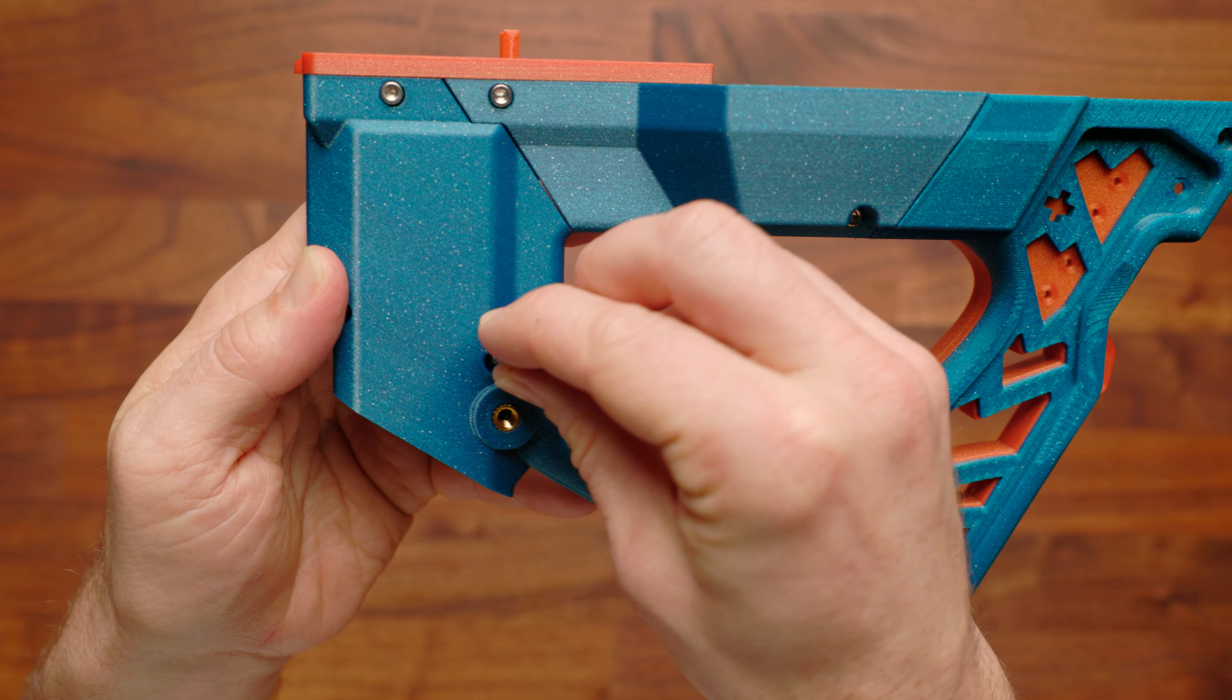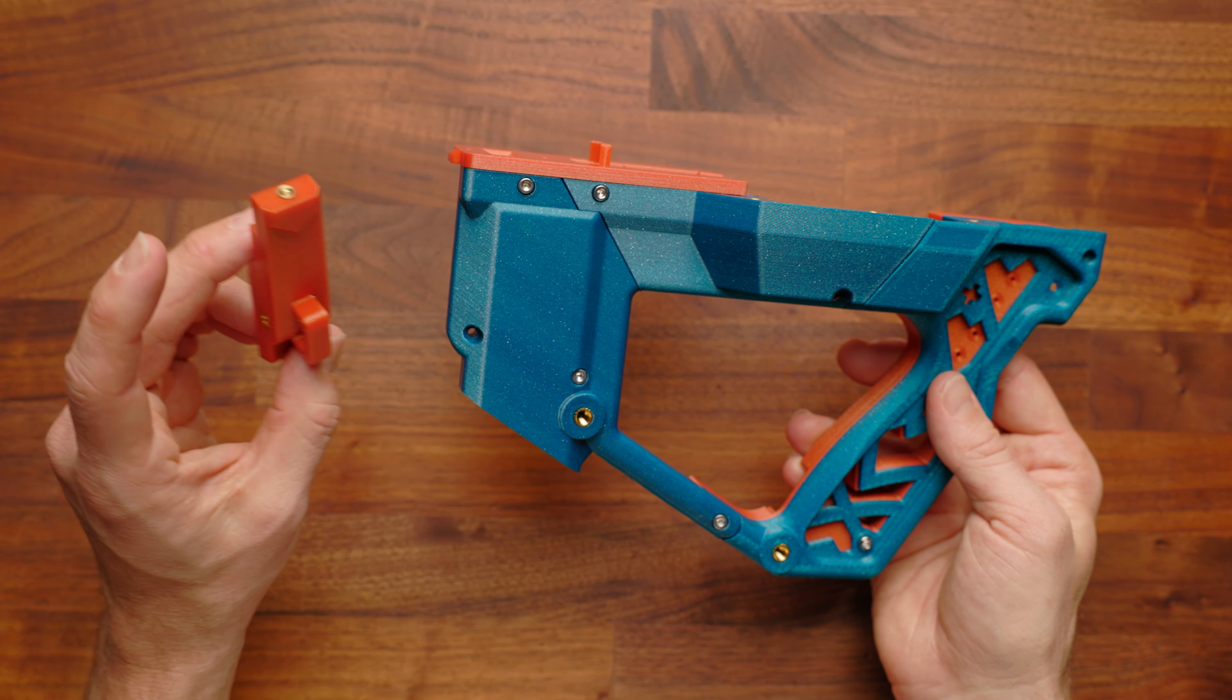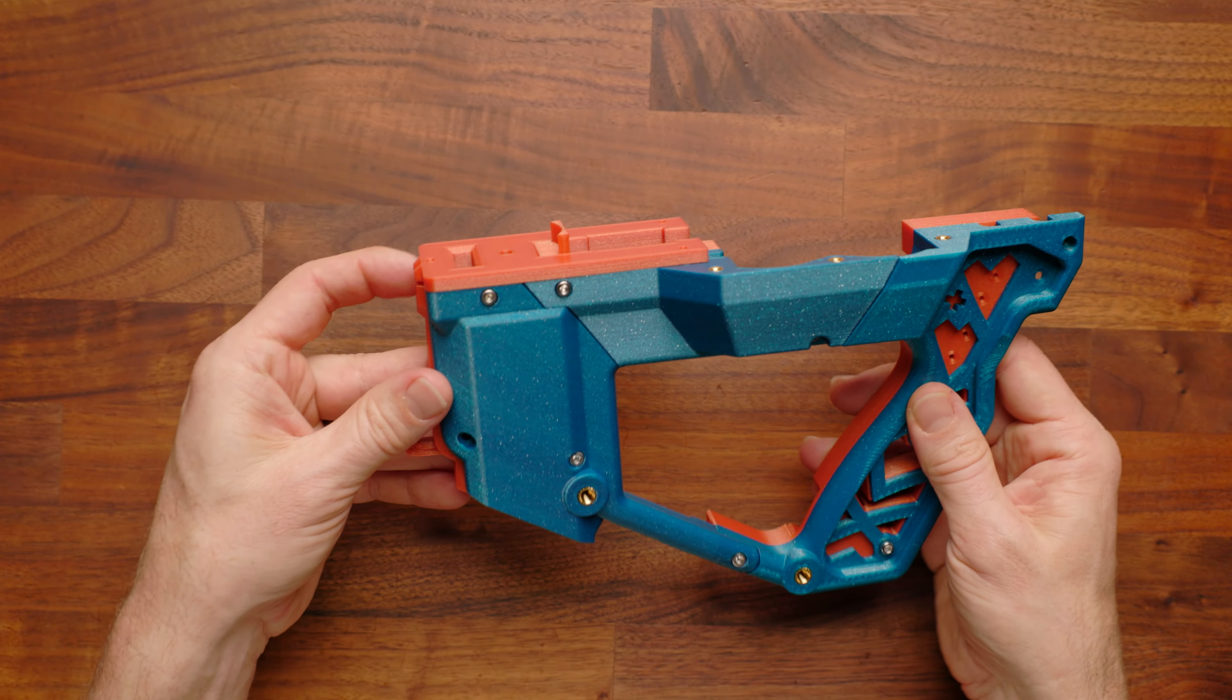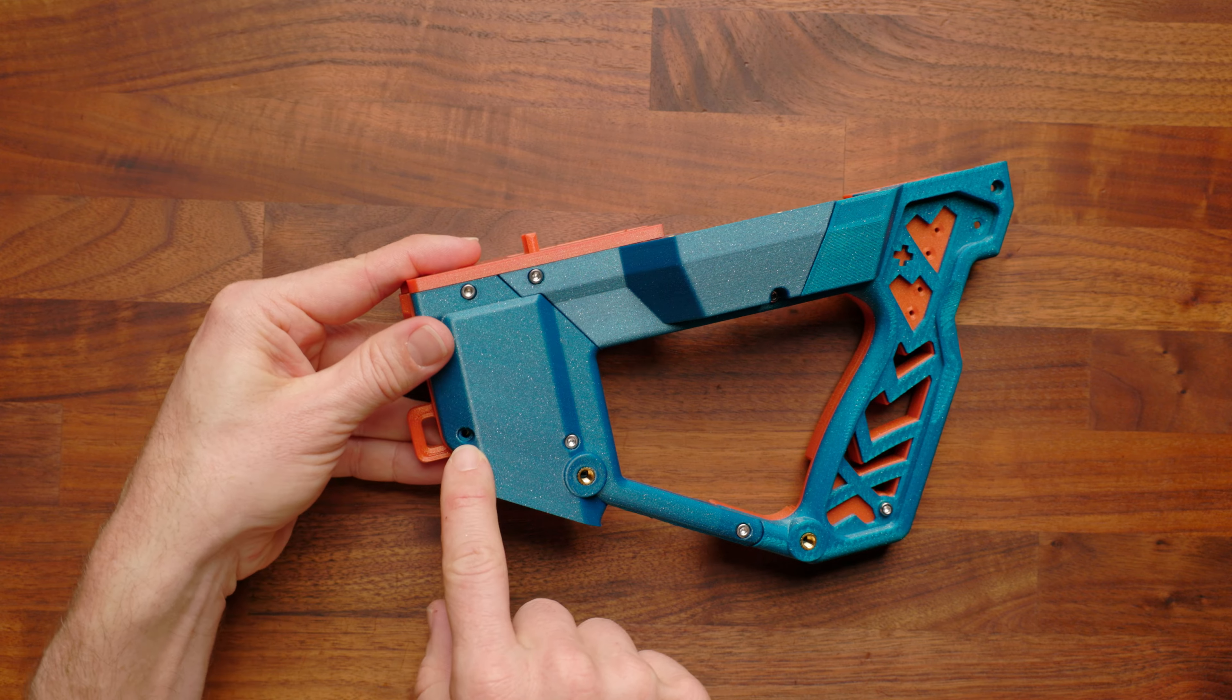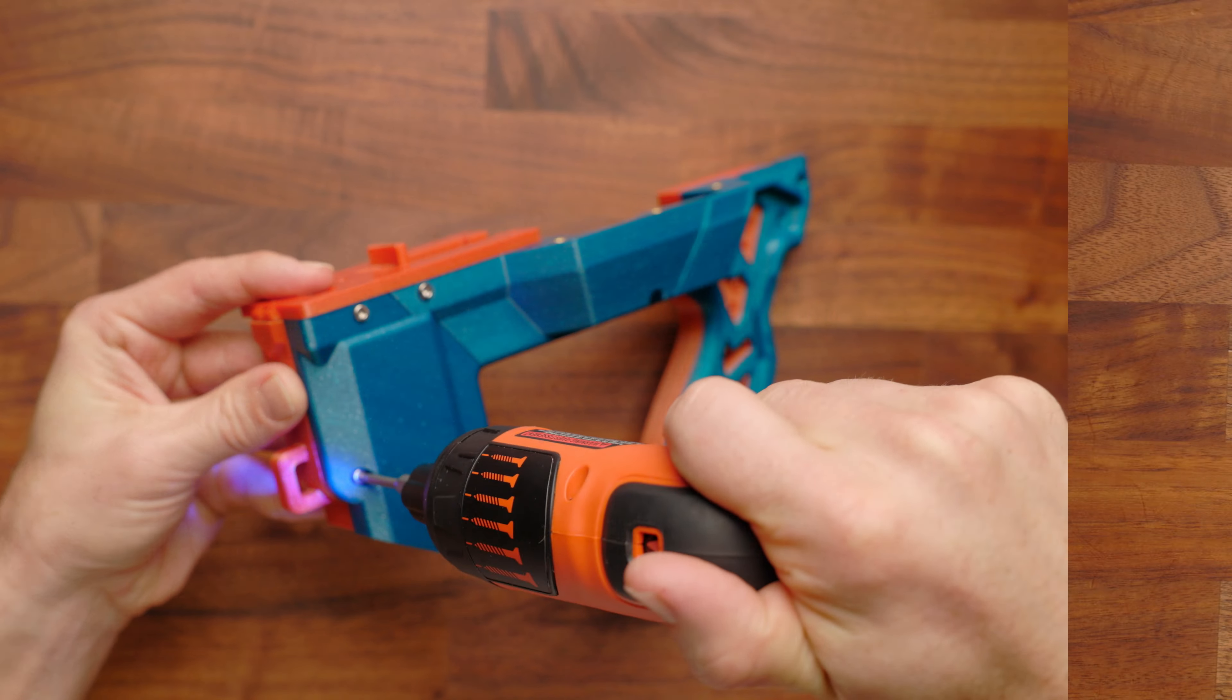Next, we're going to take a 16-millimeter screw, put it right through here. Next, we'll take our back plate, which is also our sling attachment point, and we'll slot that in there, and one 16-millimeter screw in this hole here.